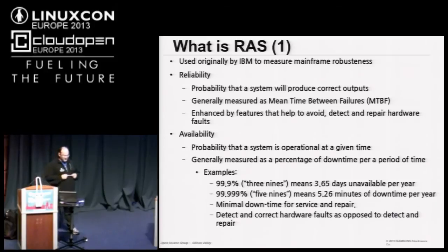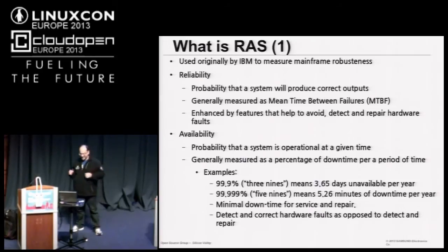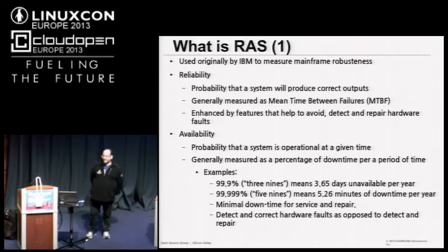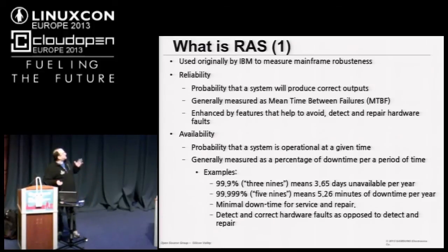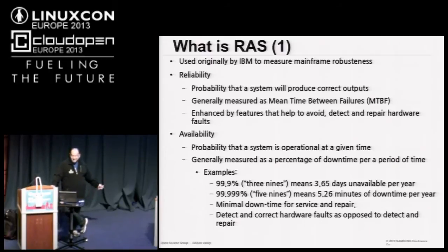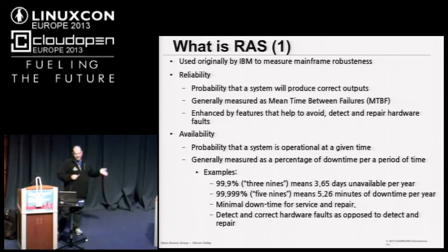The second concept is availability — the probability that the system will be operational for a given time. It's generally measured as a percentage of downtime for a period. We call 'three nines' when the system is unavailable for 3.65 days per year. Five nines is about 50 minutes of downtime per year. If I can detect hardware issues and correct those failures, I will increase the availability of the system.